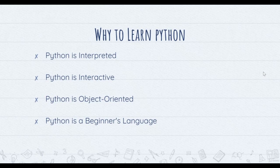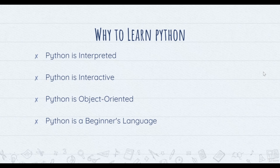Python is object oriented: it supports the object-oriented style of programming that encapsulates code within objects. And it's a beginner's language: Python is great for beginner-level programmers and supports development of a wide range of applications, from simple text processing to browsers to games. This is why people opt for Python — it is very handy and very interactive, making it easy to develop and implement applications.